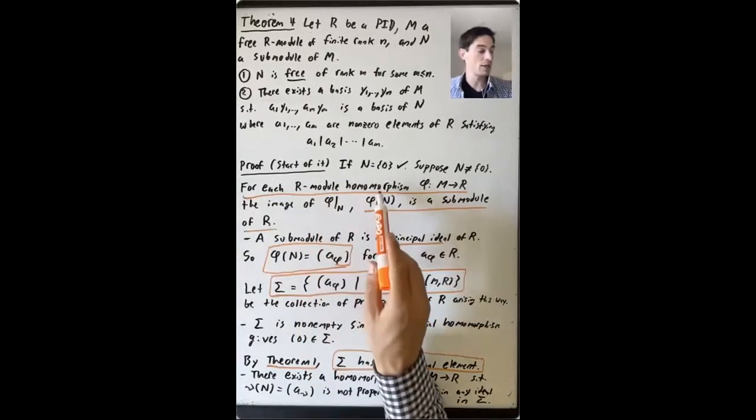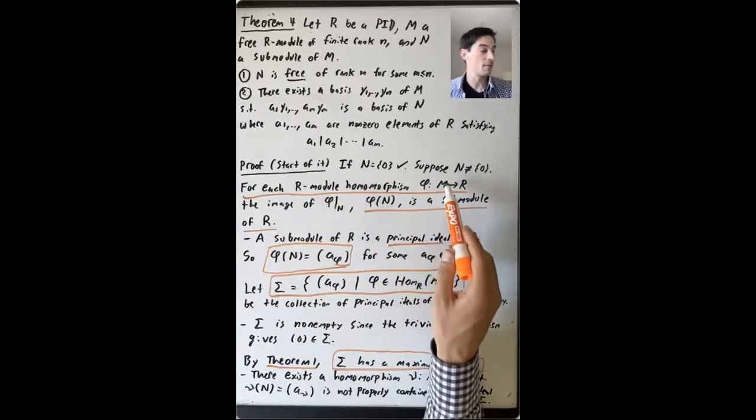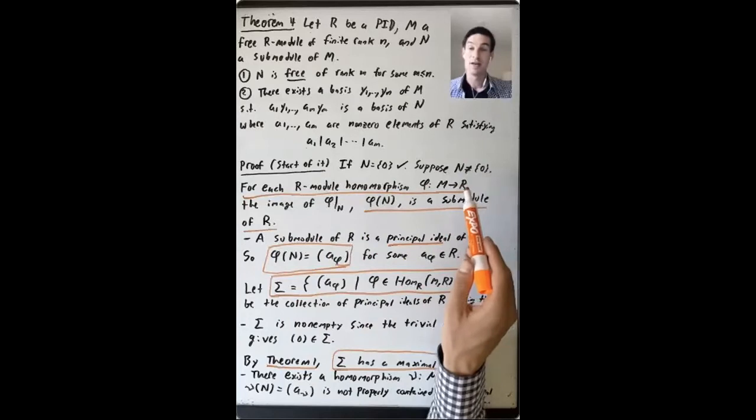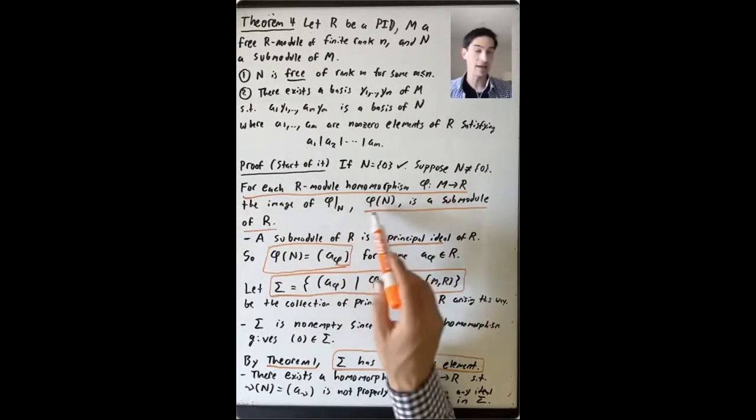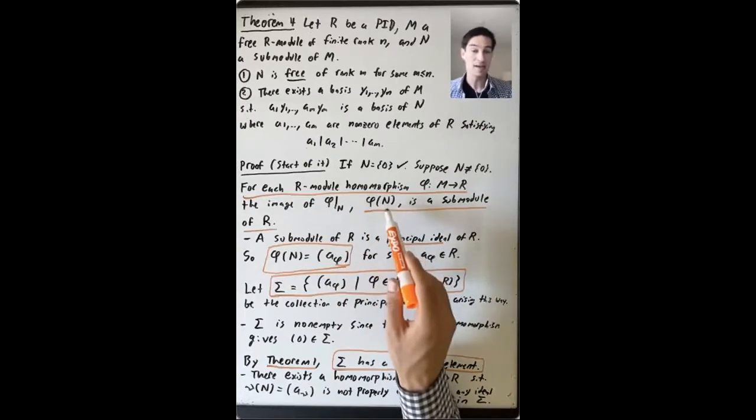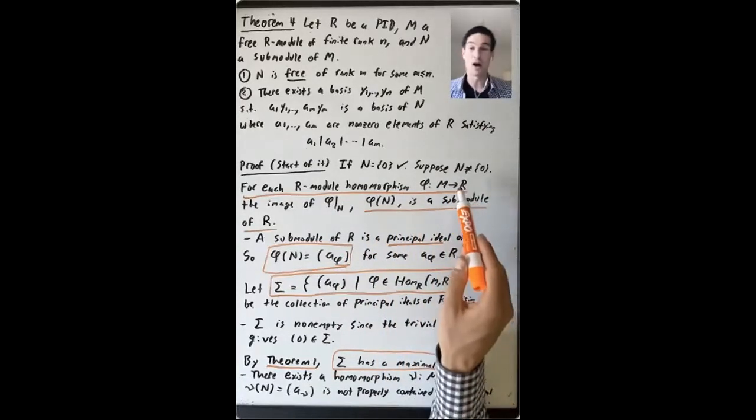First, for each R module homomorphism phi from M to R, you take the restriction of phi to the submodule N, and you get the image phi of N is a submodule of R.